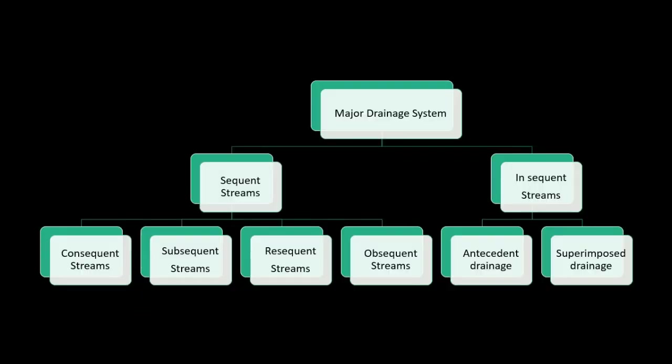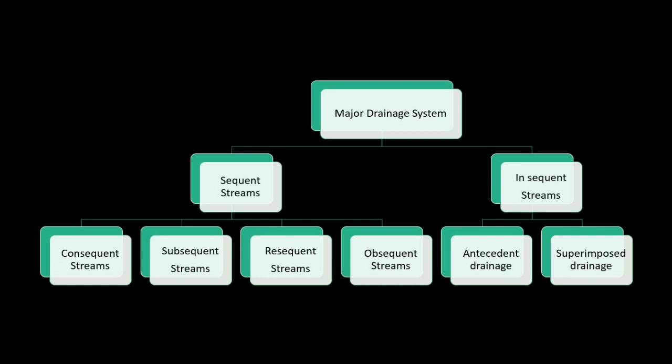If we divide the major drainage system, we can divide it into two parts. First is sequent, and second is insequent streams. Insequent streams can be divided into consequent streams, subsequent, ressequent, and obsequent. And further, insequent streams can be divided into antecedent and superimposed. Now we are going to learn about them.